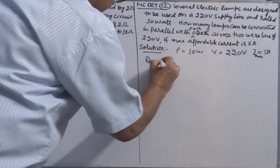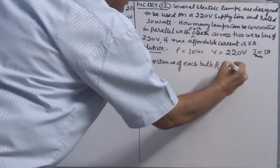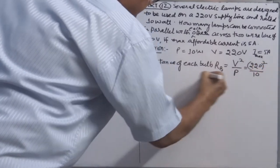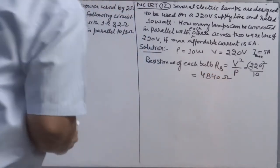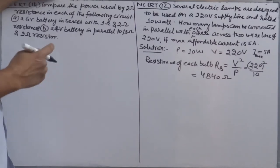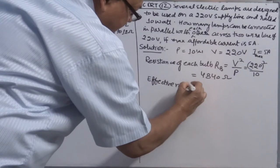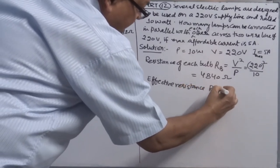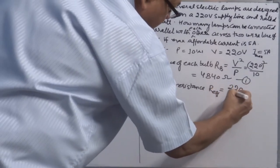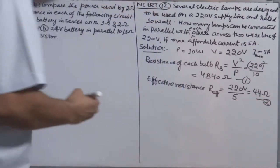First, find the resistance of each bulb. R = V² / P = 220² / 10 = 4840 ohm. So each bulb has resistance 4840 ohm. Maximum current is 5 ampere, so the effective resistance of the circuit R_effective = V / I = 220 / 5 = 44 ohm.